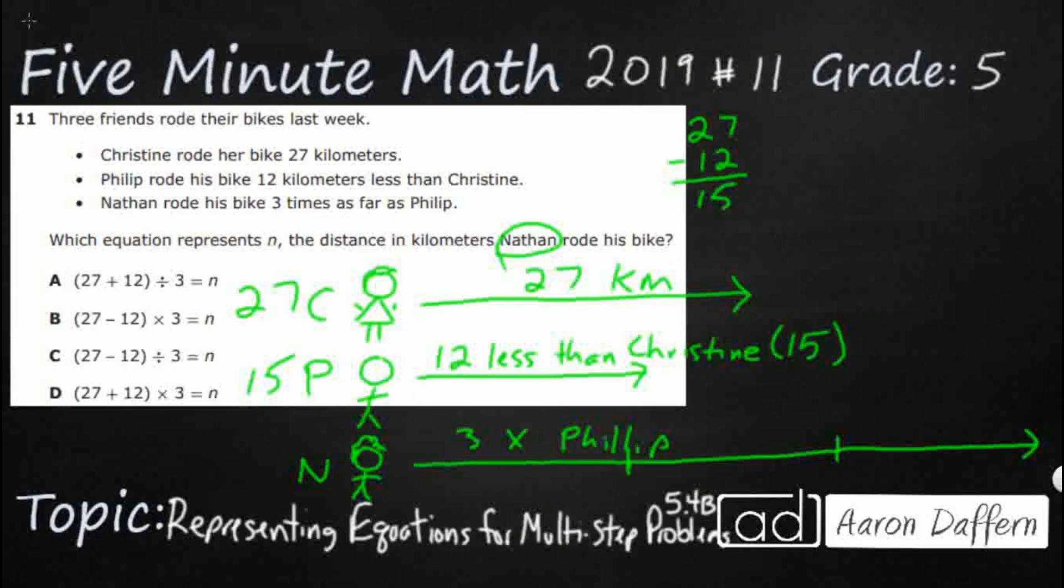And then Nathan has got three times Phillip. So that is 15, that is 15, that is 15. So if I did 15 times three, that is going to be 45.